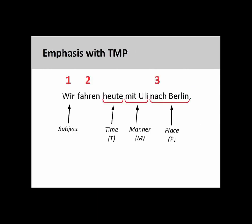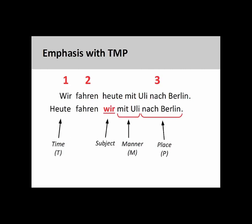German is more flexible than English in that the elements expressing time, manner, and place can be moved to the first position in the sentence in order to emphasize them. It is, for example, common to place the time element in the first position. When this occurs, the other manner and place elements remain in the third position in the regular order. The subject of the sentence is moved to immediately after the verb.